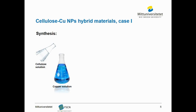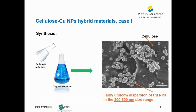Here is some characterization. As can be seen in scanning electron microscopy images, we can see a fairly uniform dispersion of copper nanoparticles in a size range of 200 to 500 nanometers inside the cellulose matrix.